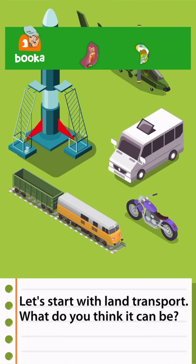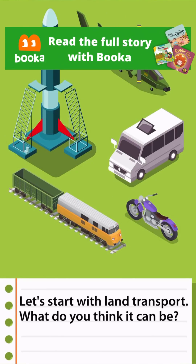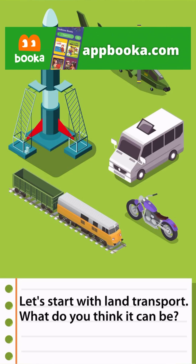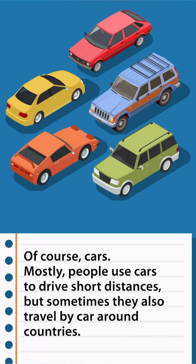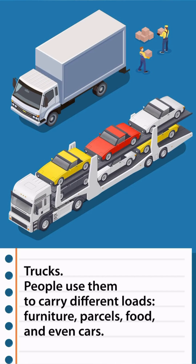Let's start with land transport. Of course, cars — mostly people use cars to drive short distances, but sometimes they also travel by car around countries. Trucks: people use them to carry different loads — furniture, parcels, food, and even cars.